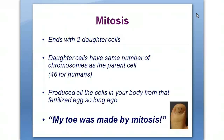Remember, we produced all the cells in your body from that fertilized egg about 15, 16, 17, or 18 years ago. An easy way to remember that body cells are made by mitosis is: my toe is made by mitosis. The process we're going to talk about today is called meiosis, or making sex cells. Your toe is not made by meiosis because it's not made of sex cells — your toe is made by mitosis.